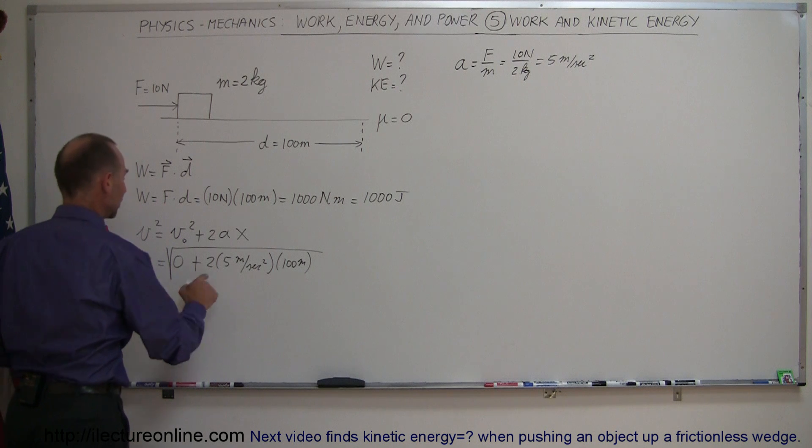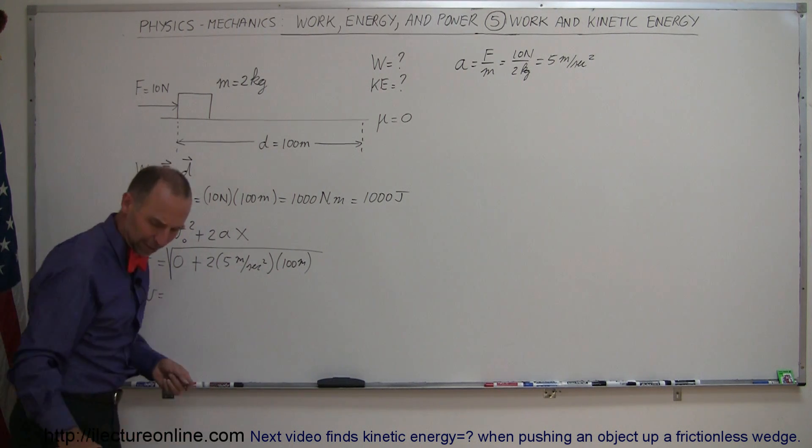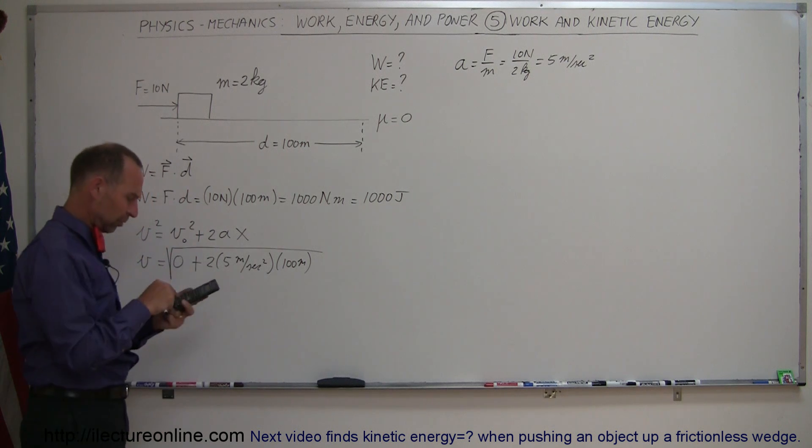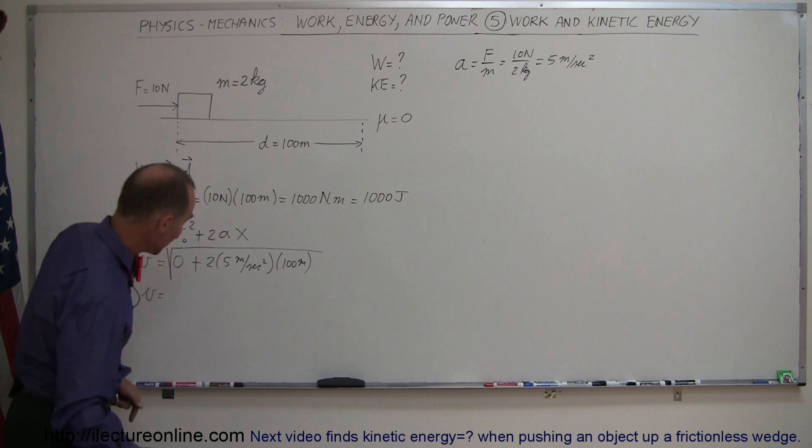So, that means the end velocity will be 2 times 10. That's 10, that's 1,000. That would be about 31 point something. Let's see, 1,000, take the square root, 31.6 meters per second.